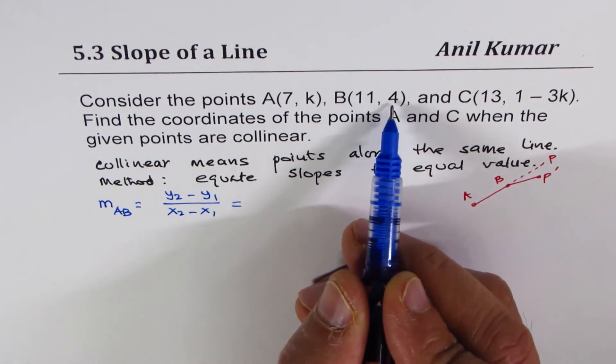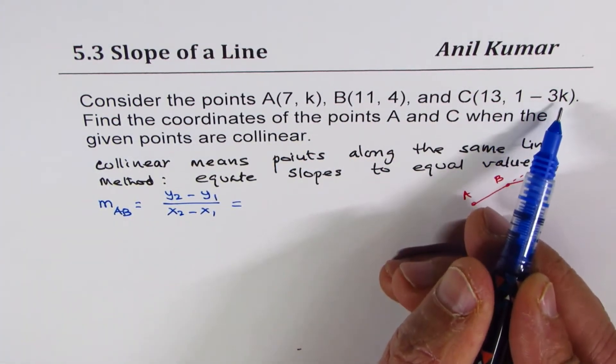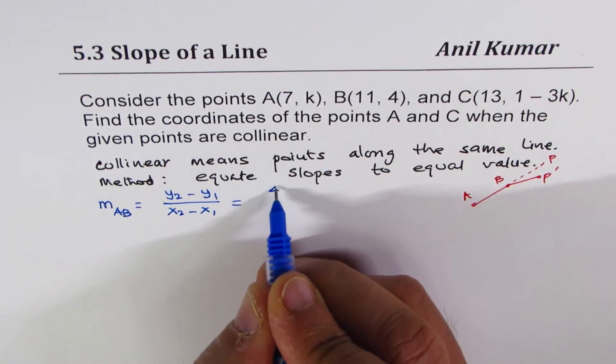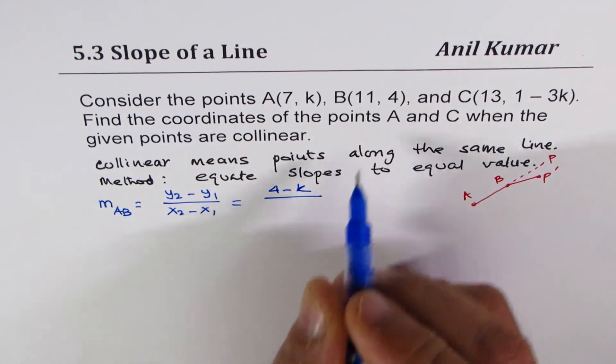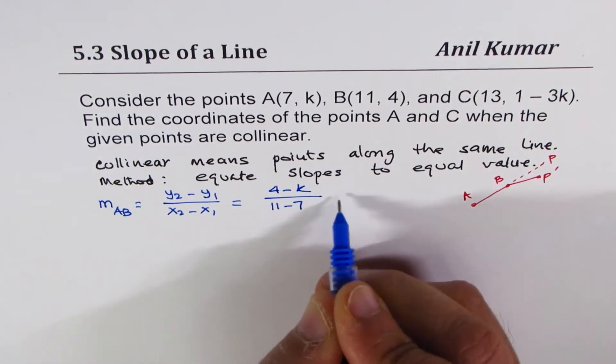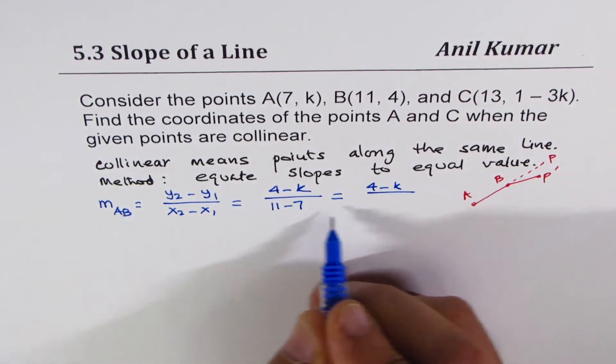We selected B because B is totally defined. There is no unknown in B, right? That's the reason. In A and C, we have unknown point. So 4 minus K divided by 11 minus 7. So we could write this as 4 minus K divided by 4.